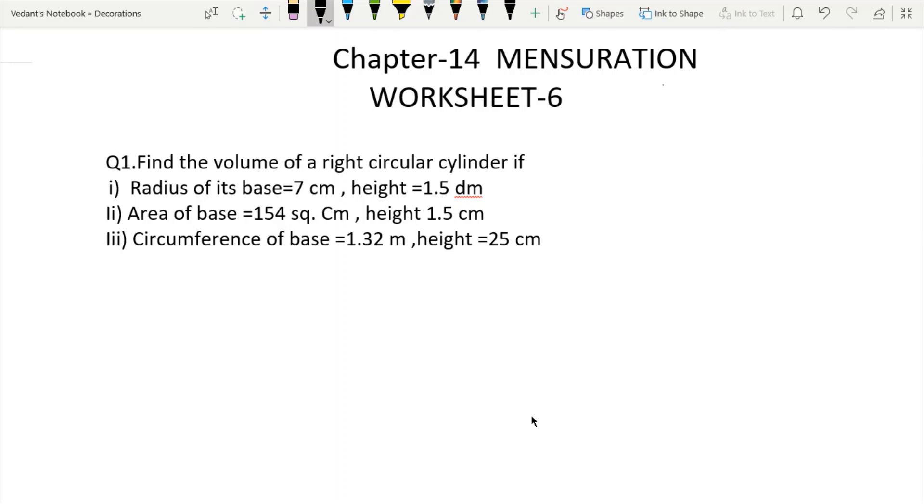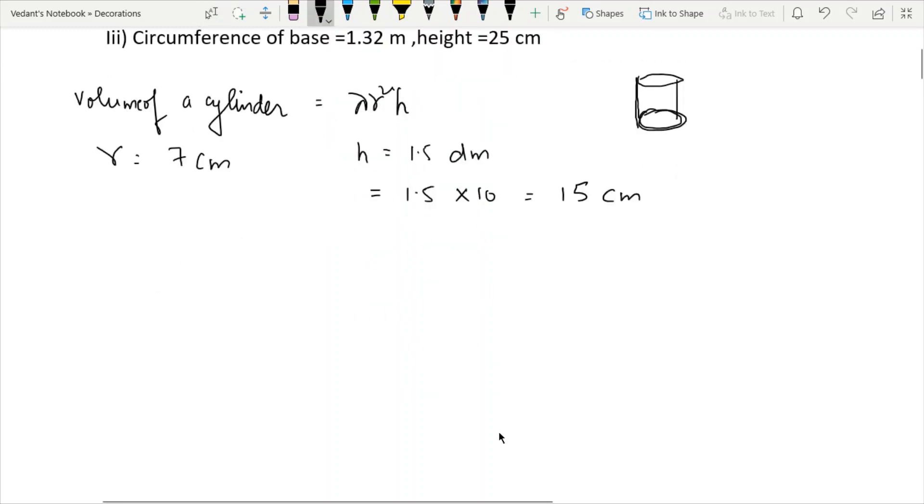First question: right circular cylinder. The height is area of base. Volume is equal to volume of cylinder is equal to πr²h. So how do we find the volume? Area of base multiplied by h. Radius is equal to 7 cm, height is equal to 1.5 dm. So we find the volume of a right circular cylinder, 15 cm height is equal to πr²h.